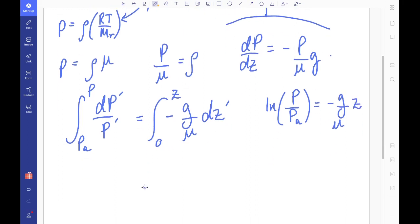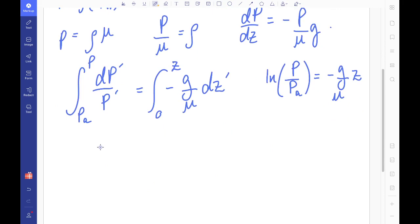Okay, if I rearrange this expression, I can get a nice form for my isothermal atmosphere. So my isothermal atmosphere has a pressure that changes with z, it's equal to a decay, an exponential decay in pressure. So it's going to be Pa times e to the minus g over mu z. Okay, that's nice.